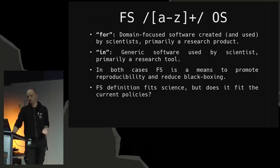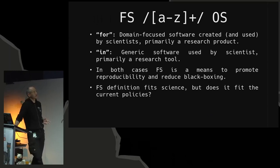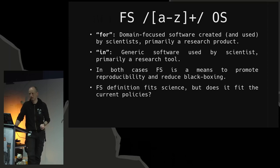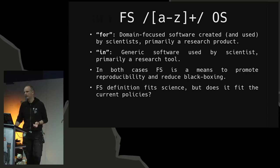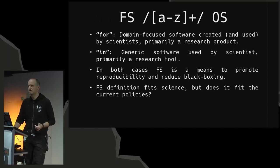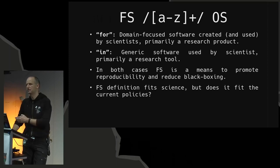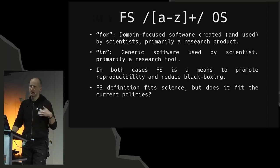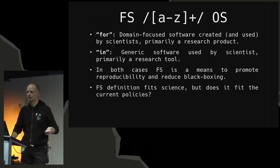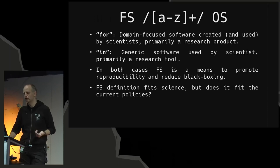Now the question is: what role can free software play in this? One of the things we need to define: are we talking about free software for open science — which is what this talk was announced for — or about free software in open science, or in science in general? The distinction is that 'for open science' is mainly about software as a research product — domain-focused software created by scientists themselves. Here we have issues like how to sustain it, how to ensure quality, and how to choose proper licensing models.